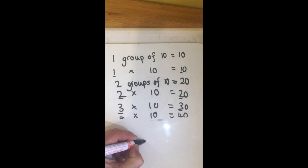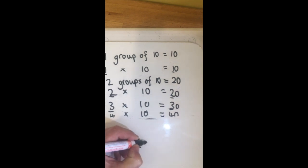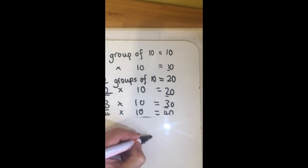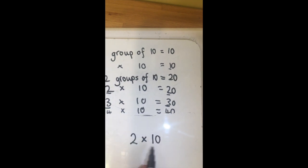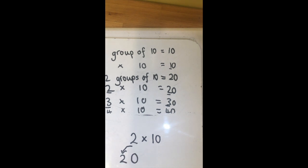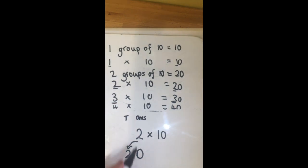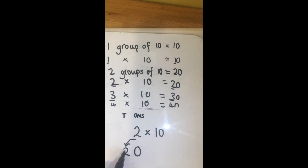So if we've got two times ten, when I multiply a number by ten, what I'm effectively doing is I'm moving my digit one place to the left and I'm adding a zero as a place marker. So this is our ones column and this is our tens column. So two times ten, I move my digit one place to the left and add zero as a place marker.